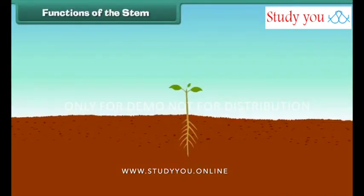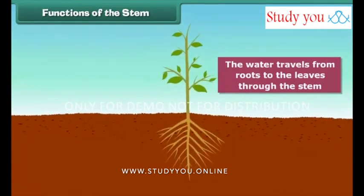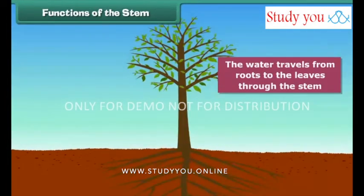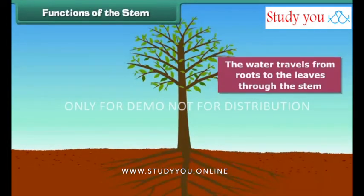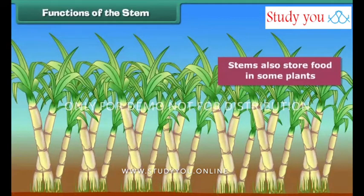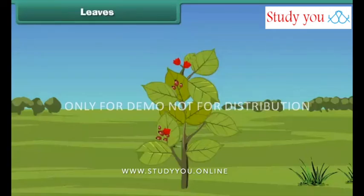The main functions of stem: the water taken in by the roots travels to the leaves through the stem, where it is used by the leaves to make food. The stem also carries food made by the leaves to all parts of the plant. Sometimes food made by the leaves is stored in the stem, as in sugarcane. Other examples are potato and onion — we eat these stems and get nutrition.